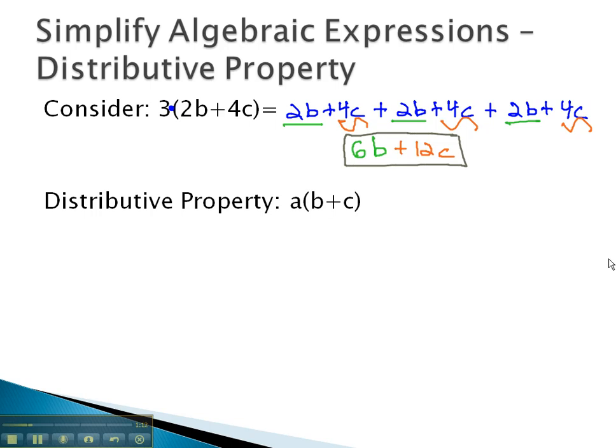What's interesting about that though, is we know we have three of these 2b's. We can do that repeated addition or multiplication in one step, 3 times 2 to give us the 6b, and the 3 times 4c to give us the 12c, because 3 times 4 is 12.